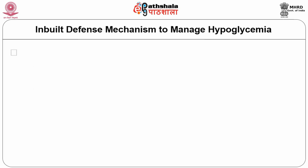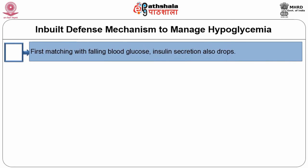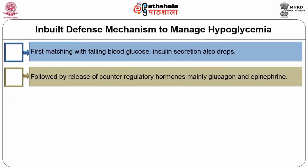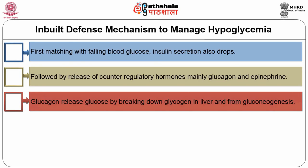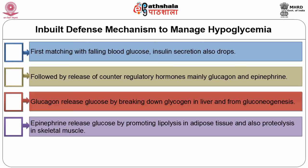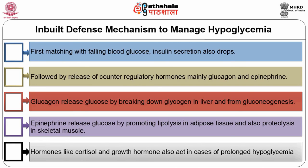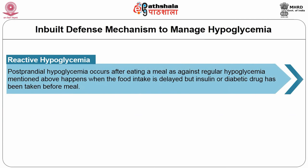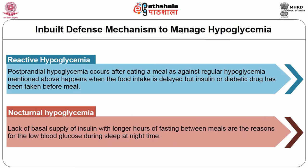The body's defense mechanism against hypoglycemia: first, insulin secretion automatically drops. Then counter-regulatory hormones — mainly glucagon and epinephrine — are released. Glucagon releases glucose by breaking down glycogen in the liver and through gluconeogenesis. Epinephrine releases glucose by promoting lipolysis in adipose tissue and proteolysis in skeletal muscle. Cortisol and growth hormone act in prolonged hypoglycemia. Reactive hypoglycemia is postprandial — blood sugar falls after eating. Nocturnal hypoglycemia occurs due to lack of basal insulin during long fasting hours between meals.